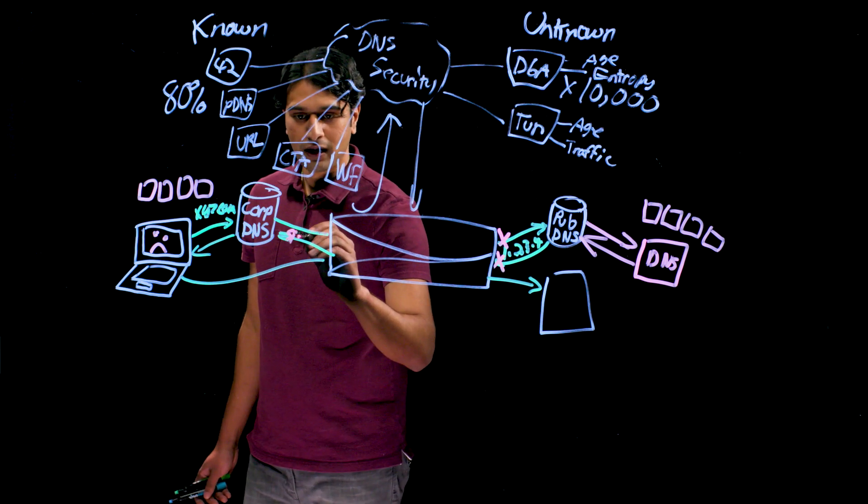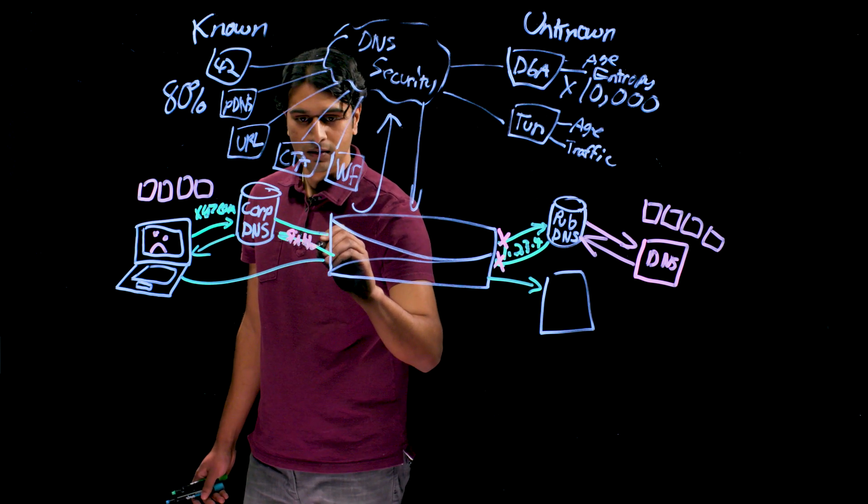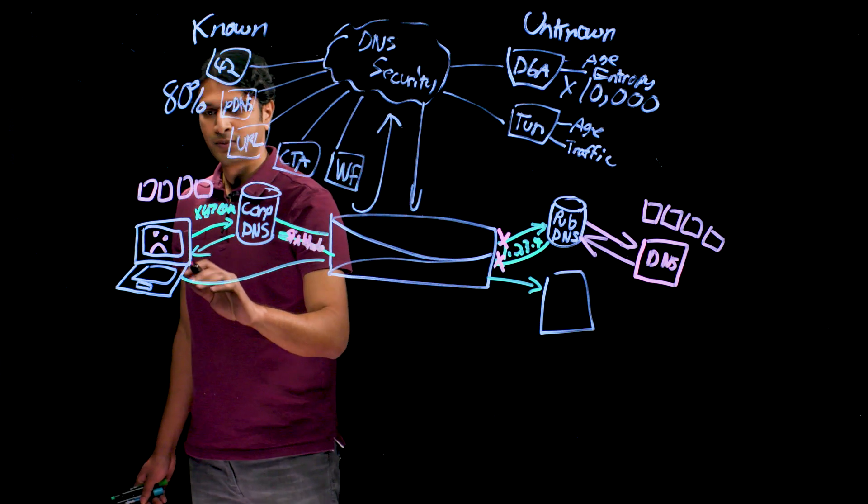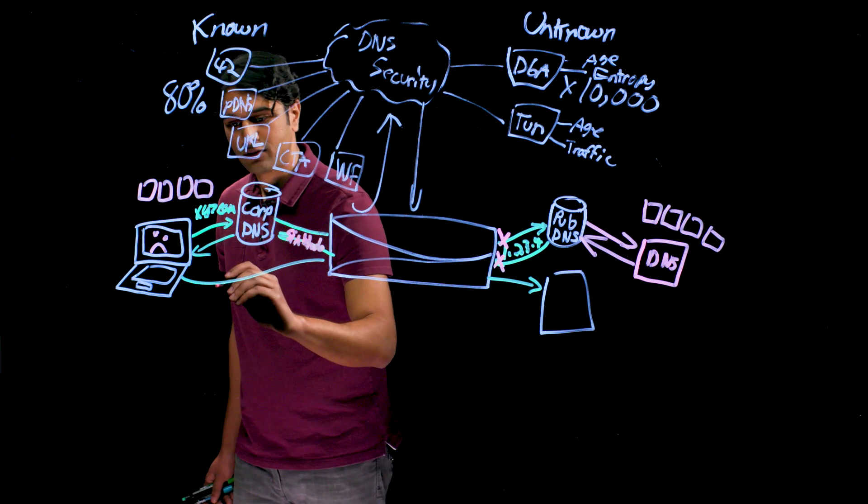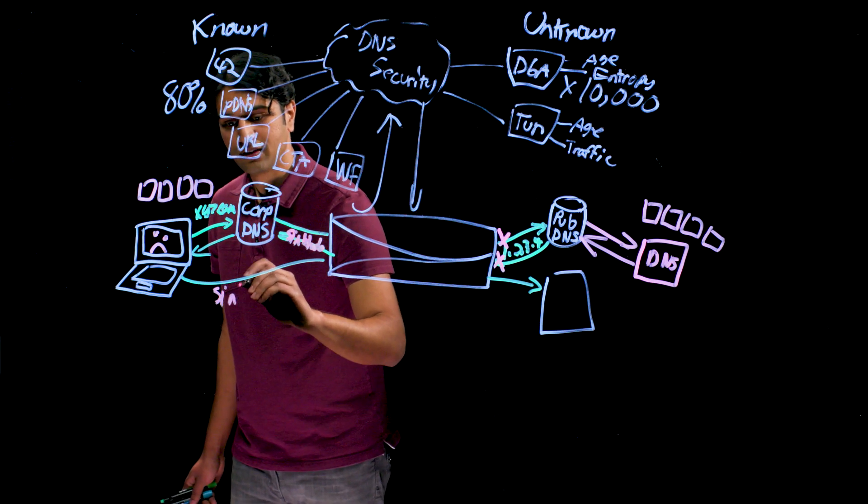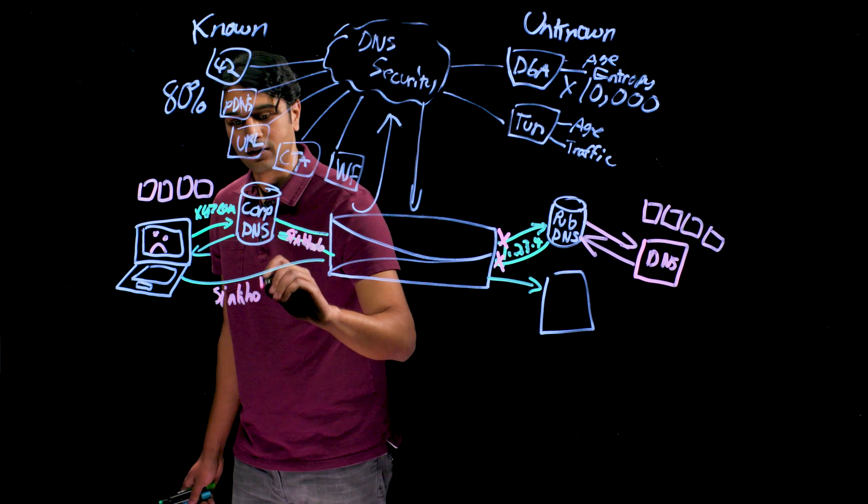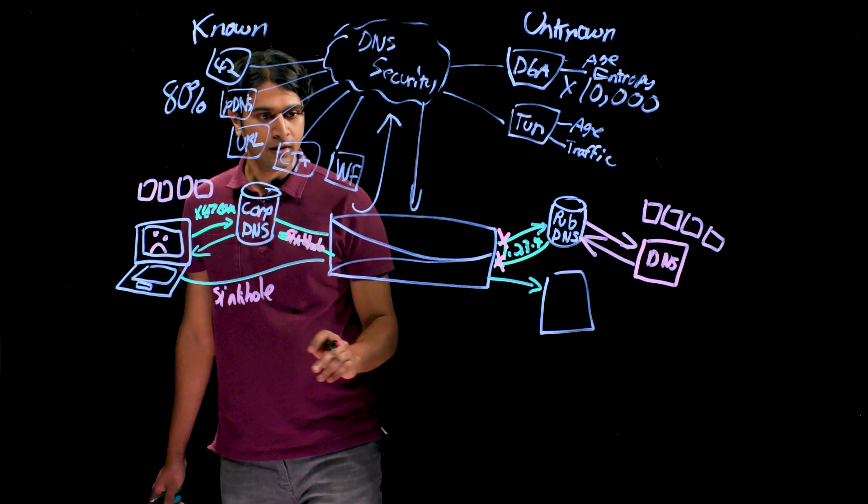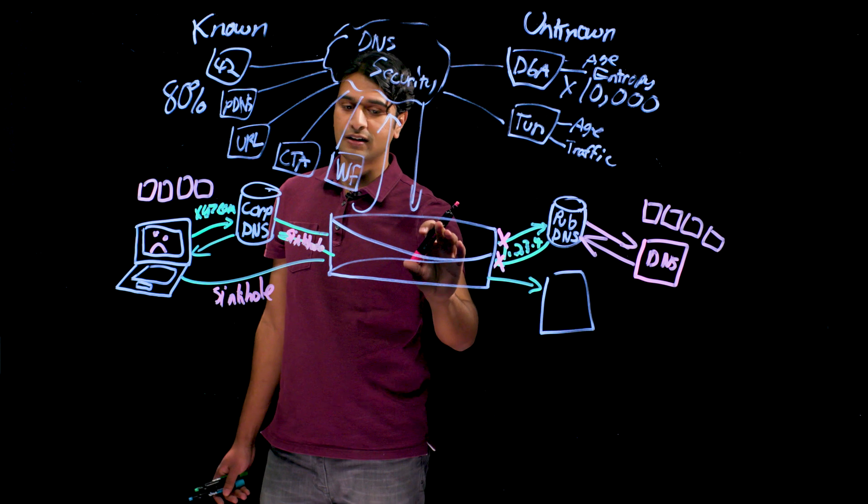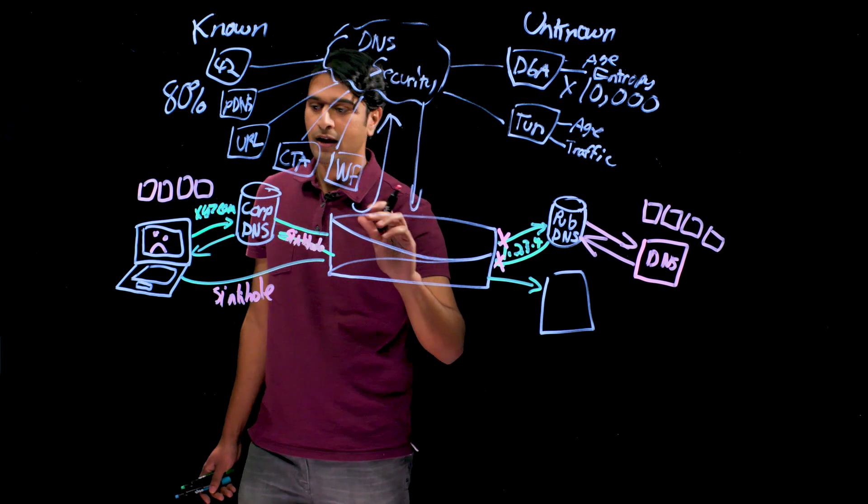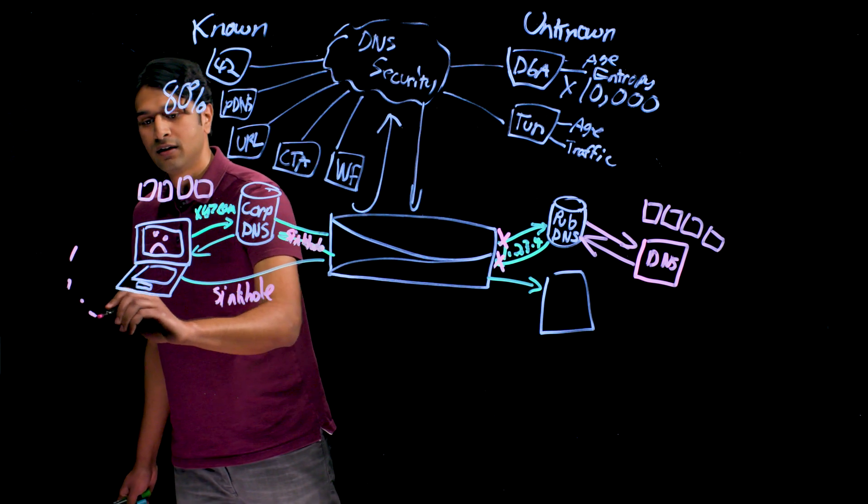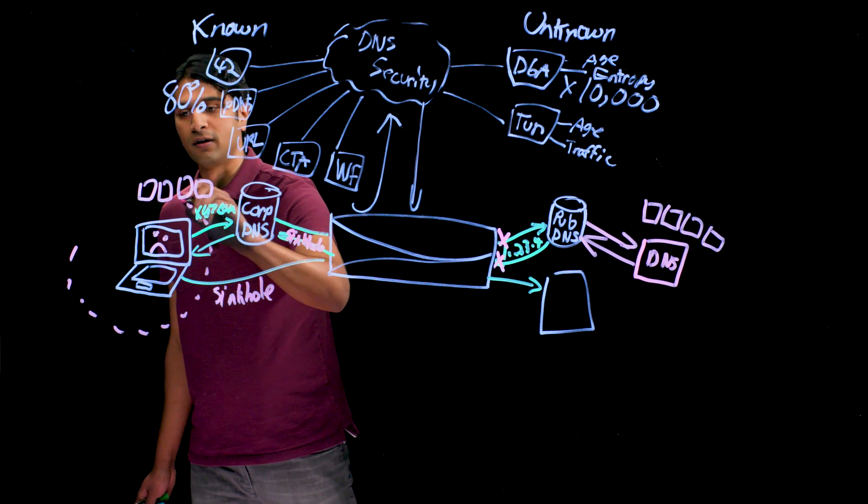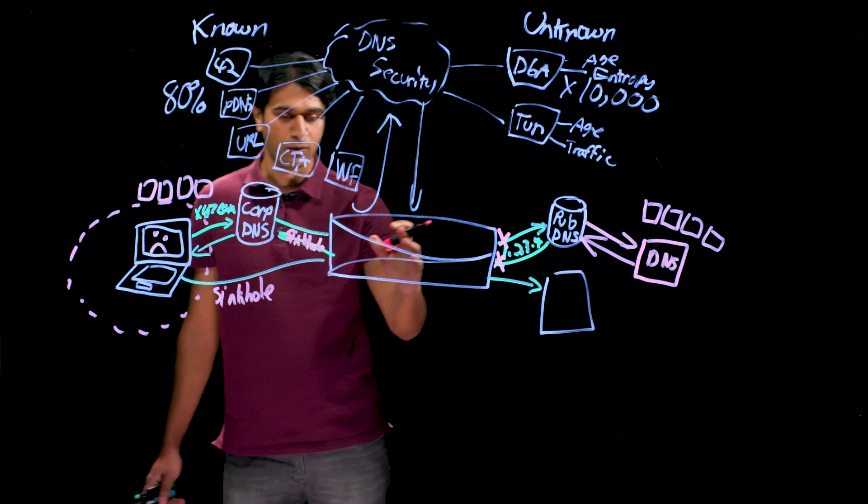This sinkhole IP is sent back to the host. If the host attempts to make a connection to the sinkhole IP, which it thinks is the attacker's malicious resource, the next generation firewall, since it's in line, can pick up on this traffic and automatically isolate the host from portions in your network, as you can define in firewall security policy.